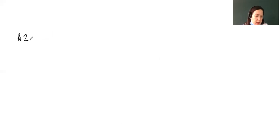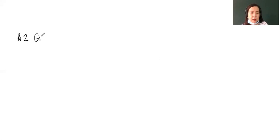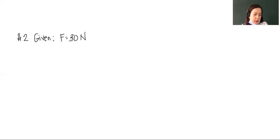For number two, the problem states: a 30 newton net force on a skater produces an acceleration of 0.6 meter per second squared. What is the mass of the skater? Let us write the given items first: force is 30 N and the acceleration given is 0.6 meter per second squared.